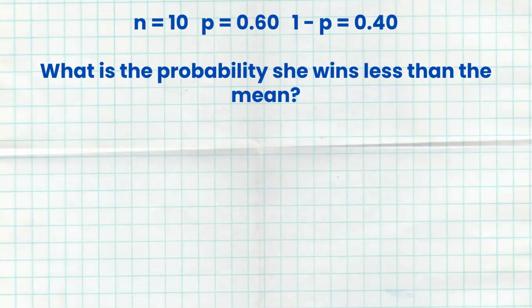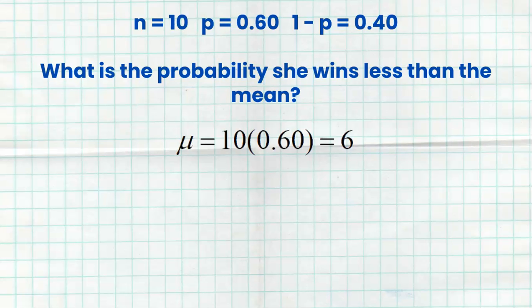Here's another very popular question because it's a little bit more multi-step: what is the probability she wins less than the mean? A lot of kids are like, I don't know how to answer this. The first thing you do is figure out what the mean is. Hopefully you remember the formula for the mean of a binomial distribution — it's on the AP stats formula sheet. You just take your number of trials, 10, multiply it by the probability of success, 0.6, and we get six. So the mean is six. In the long run, she would expect to win six out of 10 games. The question wants us to find the probability she wins less than the mean, which is less than six — so five, four, three, two, one, or zero wins.